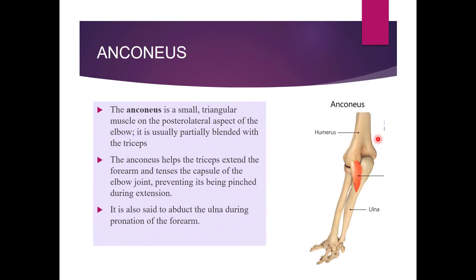The anconeus muscle is a small triangular muscle on the posterolateral aspect of the elbow. It is usually partially blended with the triceps muscle. Anconeus helps triceps in extending the forearm, tenses the capsule of the elbow joint preventing it from being pinched during extension, and is also said to abduct the ulna during pronation of the forearm.